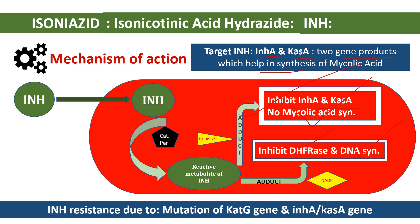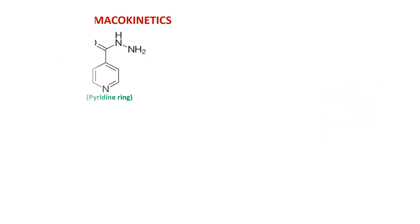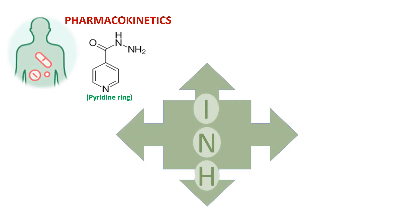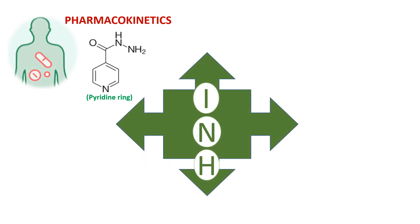The resistance which occurs against isoniazid is due to mutation of these two genes — InhA and KasA — which help in the synthesis of mycolic acid. Now we will see the pharmacokinetics or ADME of isoniazid.